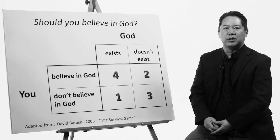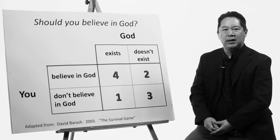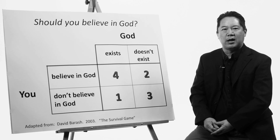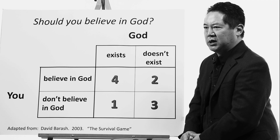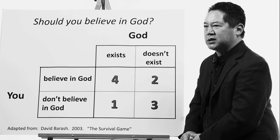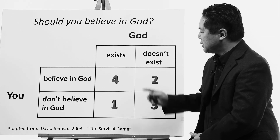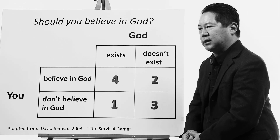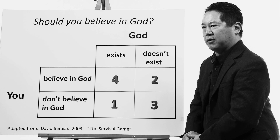This results in a two-by-two matrix which game theorists refer to as a payoff matrix. Each cell of the matrix has a certain payoff to you depending on whether you choose to believe in God or not, and whether he exists or not. The absolute numbers aren't important, just the relative numbers — four is the most desirable, highest payoff to you, and one is the least desirable payoff.